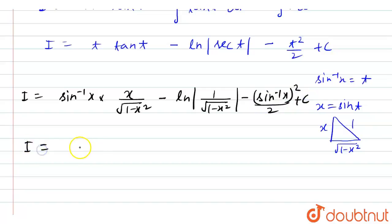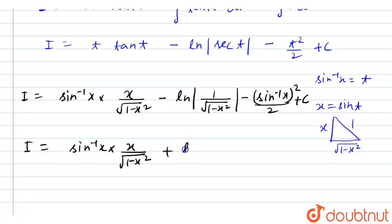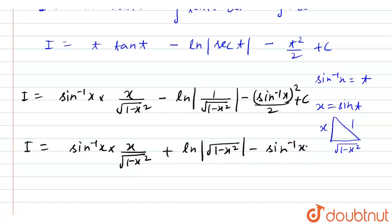We get i equal to sine inverse x into x upon square root of (1 minus x squared), plus ln of square root of (1 minus x squared), minus (sine inverse x) whole squared by 2, plus c. And we are done.